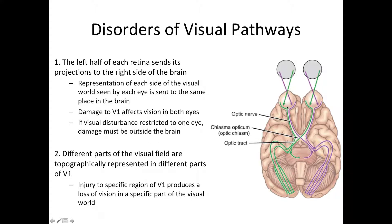The representation of each side of the visual world seen by each eye is sent to the same place in V1 cortex. Therefore, damage of V1 will affect both eyes. However, if you have a visual disturbance restricted to one eye, it has to be from outside of the brain — before information crosses over in the optic chiasm — so either in the optic nerve or in the retina.